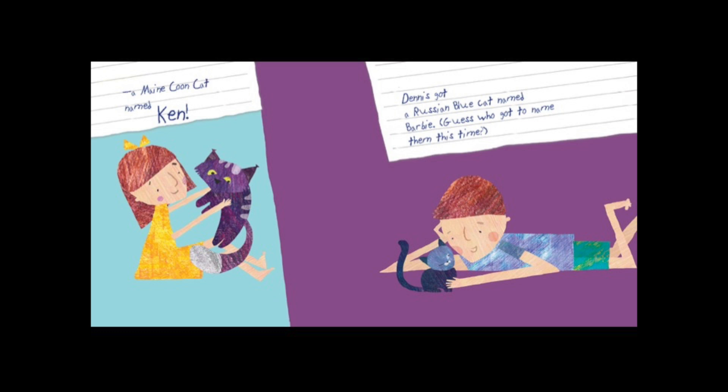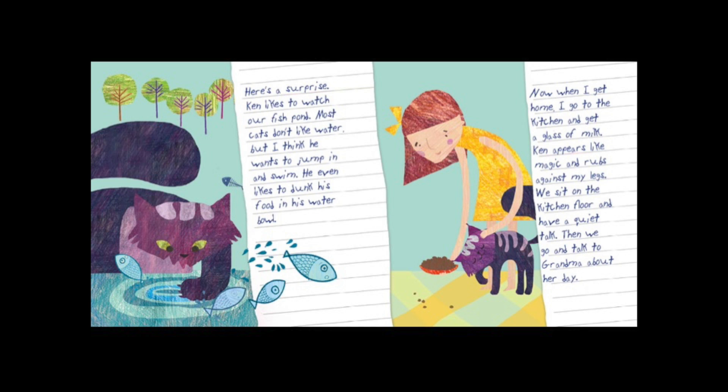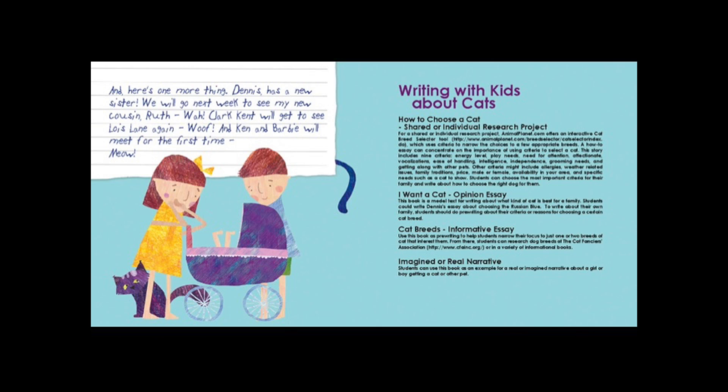Ken likes to watch our fish pond — most cats don't like water, but I think he wants to jump in and swim. He even likes to dunk his food in his water bowl. Now when I get home, I go to the kitchen and get a glass of milk. Ken appears like magic and rubs against my legs. We sit on the kitchen floor and have a quiet talk, then go and talk to Grandma about her day. Dennis has a new sister. We will go next week to see my new cousin Ruth. Clark Kent will get to see Lois Lane again, and Ken and Barbie will meet for the first time.